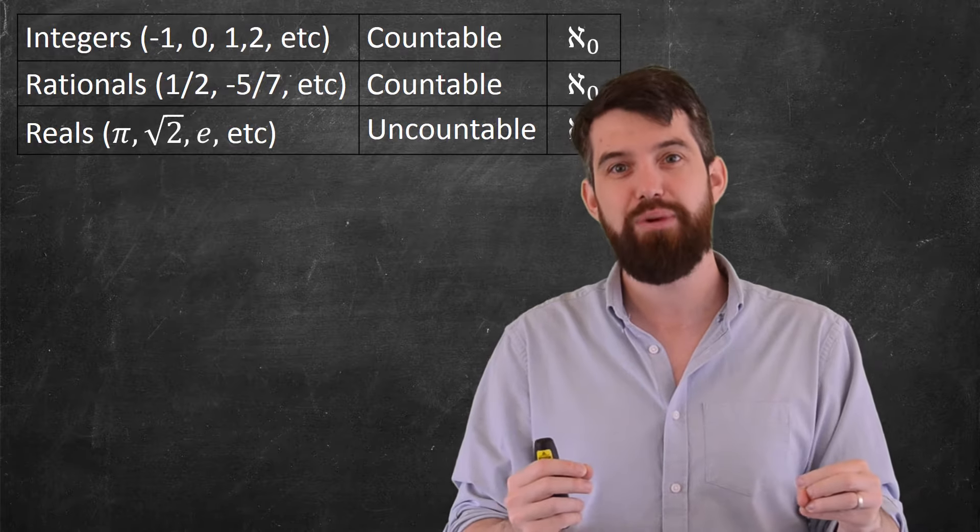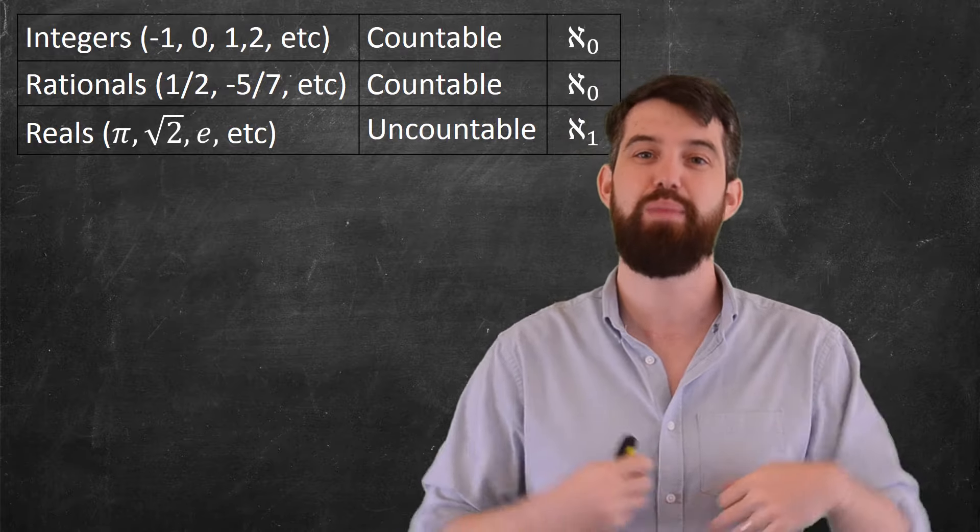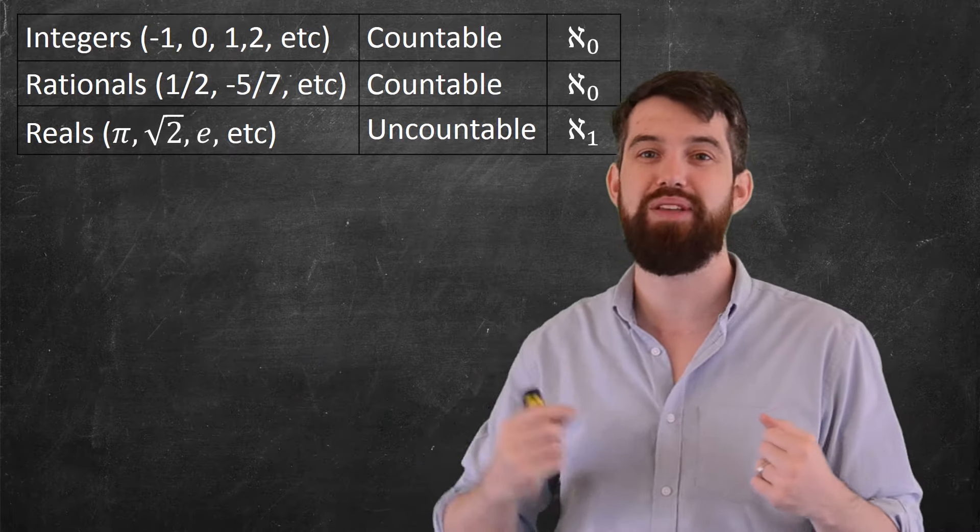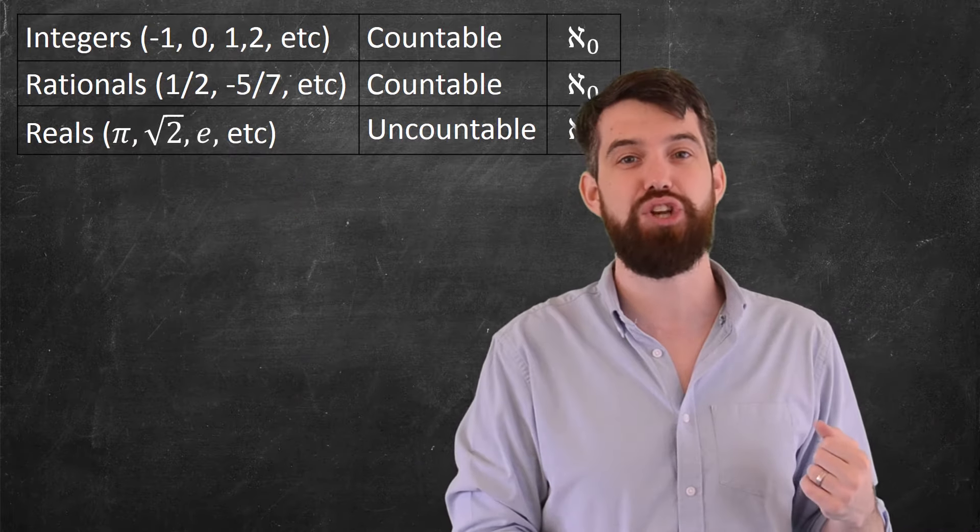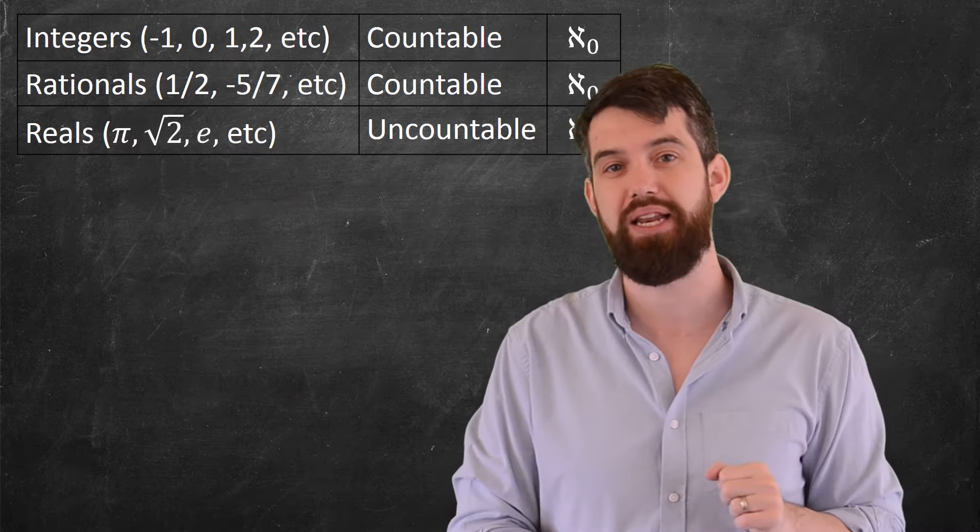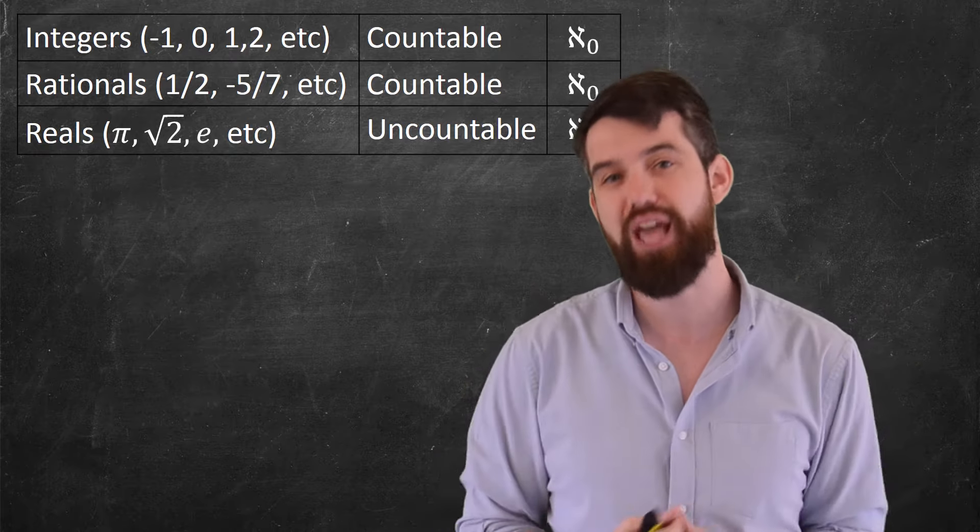But here in this video, we've shown that you cannot do that for the real numbers. No matter how you try to line them up, this Cantor diagonalization argument destroys the ability to make them countable, and so we say that this set is uncountable.